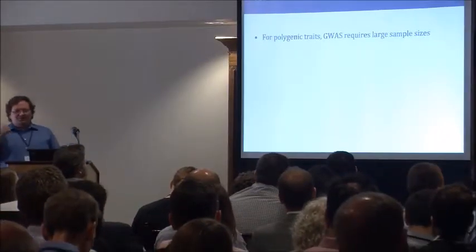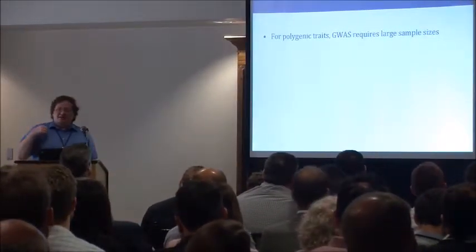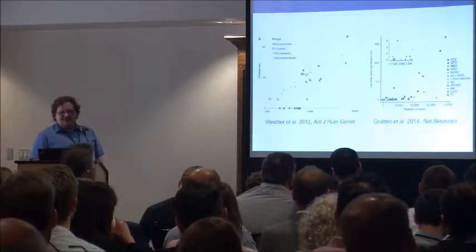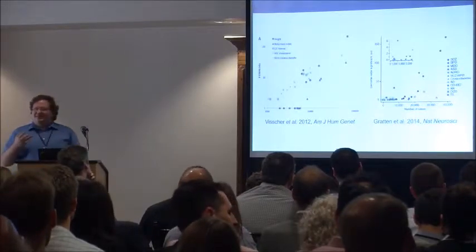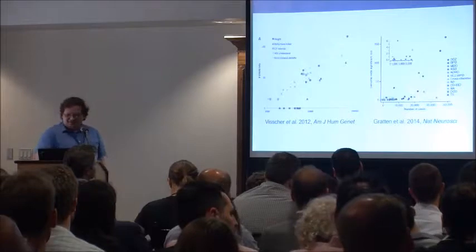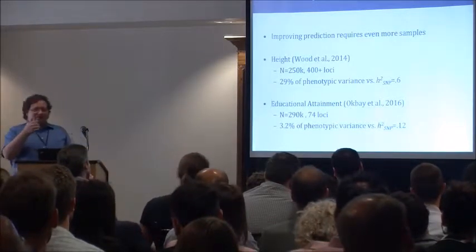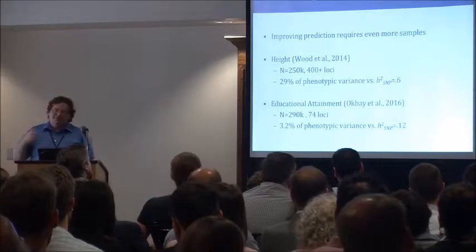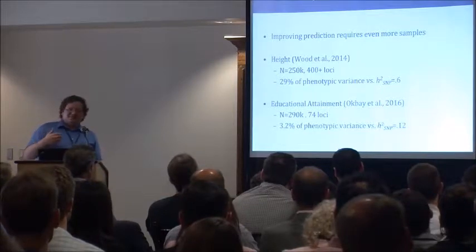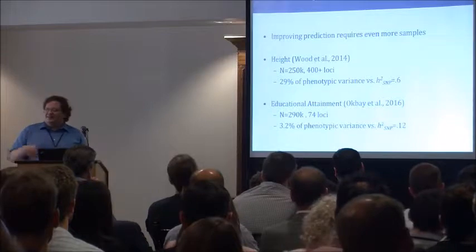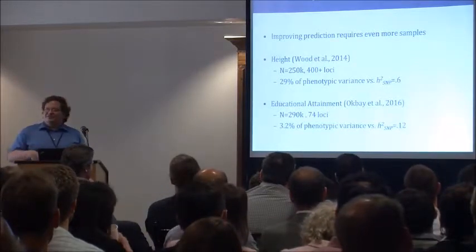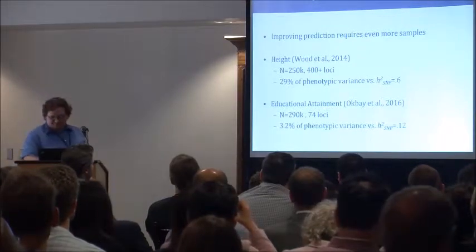As Dan laid out this morning, for highly polygenic traits, the sample size demands for GWAS — and by extension for getting good predictive accuracy out of polygenic scores — are fairly demanding. Review papers have focused on this: you need tens or hundreds of thousands of individuals to start accruing significant hits. But beyond just detecting loci, for risk scores we need to drive down the noise in our estimates of actual effect sizes. So arguably the sample size demands for risk scores are even higher, and this is seen in the remaining gap between the variance explained by polygenic scores versus the theoretical maximum of SNP heritability.